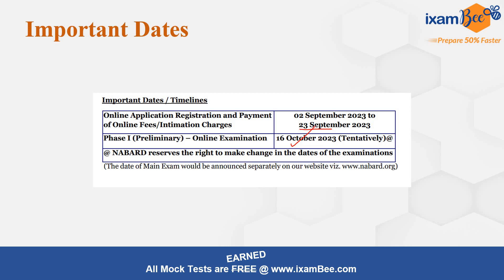After that there will be Phase 2. Some students were also asking how much time will be given between Phase 1 and Phase 2. Going by last year's trend, the recruitment was announced on 18th of July, Phase 1 exam was on 7th of September, and Phase 2 was on 29th of October — so there were approximately 45-50 days between Phase 1 and Phase 2 in 2022. If the same trend is followed this year and Phase 1 is on 16th October, then somewhere in November end or December, Phase 2 will be conducted.